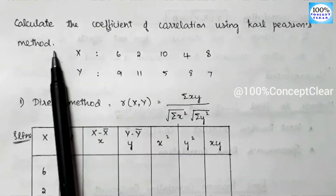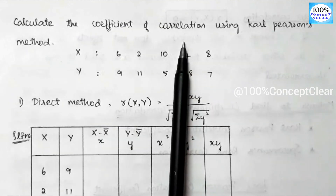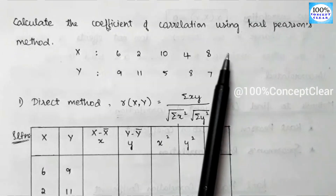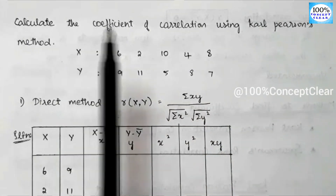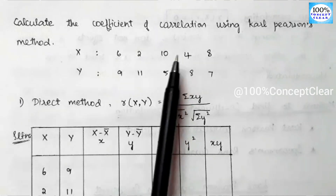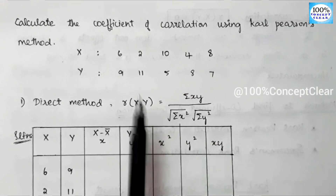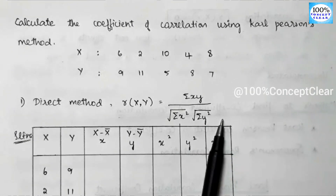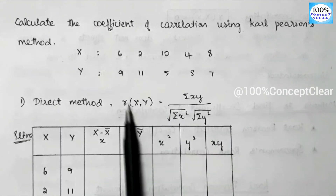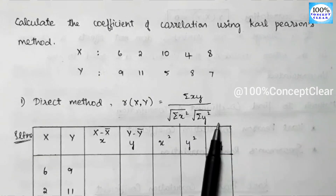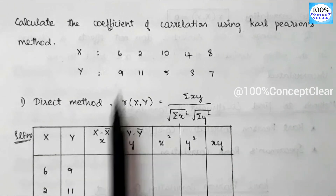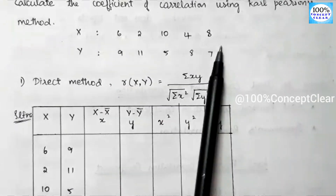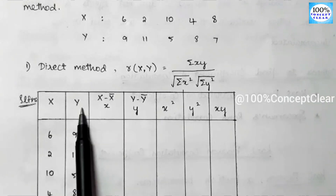Using the first formula, the direct method, we need capital X and capital Y values from the question. The capital X values are 6, 2, 10, 4, 8. We also have the capital Y values given. We calculate x-bar using x-bar = Σx / n. Adding the X values gives Σx = 30, and with n = 5, x-bar = 6.